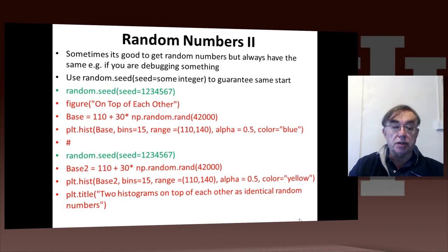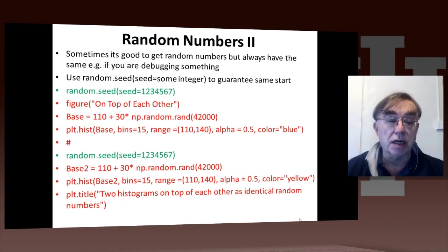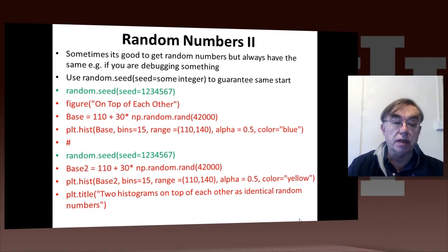We have this Python code here that sets the seed to be 1234567, not clearly a very sensible choice. Then we draw a figure, we plot two histograms on it. Each of the histograms is two random variables, base and base2. Both of these are from 110 to 140 uniformly distributed. And base and base2 are started with the same seed. If you start them with the same seeds, they're going to be identical.